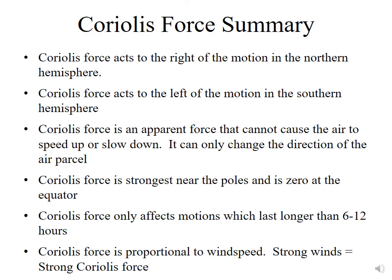To summarize the Coriolis force: it acts to the right of motion in the Northern Hemisphere and to the left in the Southern Hemisphere, and is zero at the equator. It is an apparent force — it cannot speed up or slow down an air parcel, only change its direction. The Coriolis force is strongest near the poles, affects only motions lasting longer than a few hours, and is proportional to wind speed — the stronger the winds, the stronger the Coriolis force.